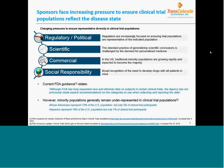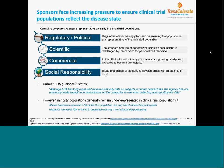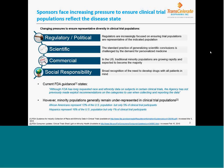The practice of generalizing scientific conclusions is challenged by the demand for personalized medicine. In the US, traditional minority populations are growing rapidly and are expected to become the majority. In the United States, although the FDA has long requested race and ethnicity data on subjects in certain clinical trials, the agency has not previously made explicit recommendations on the categories to use when collecting and reporting this data.